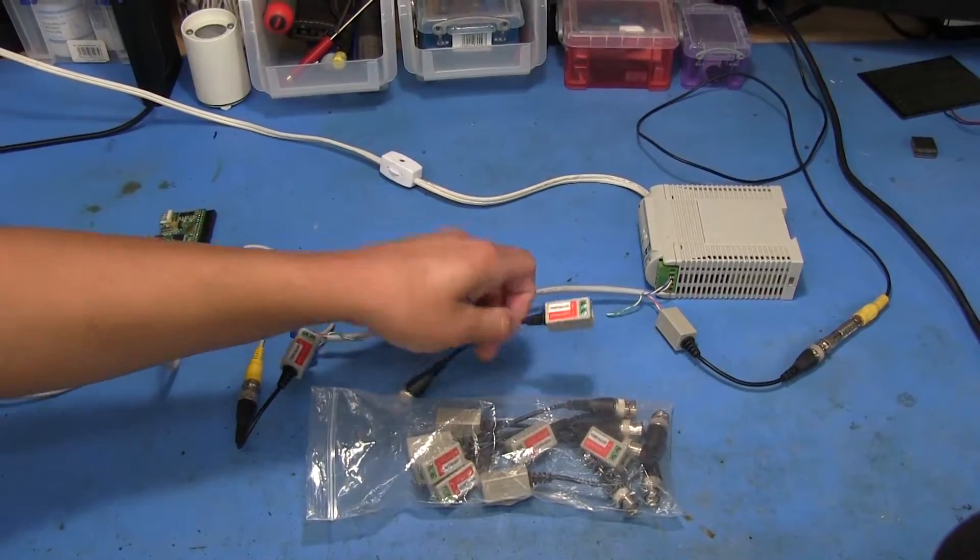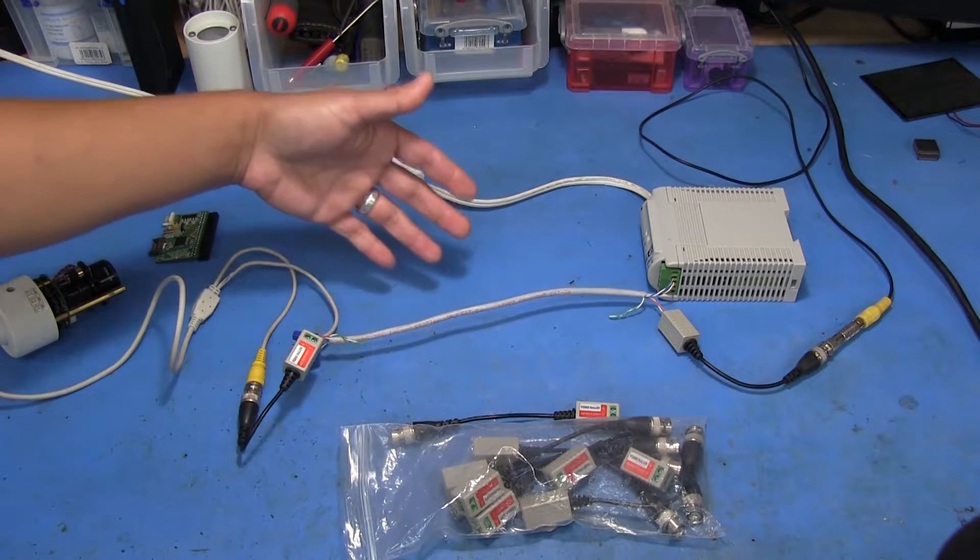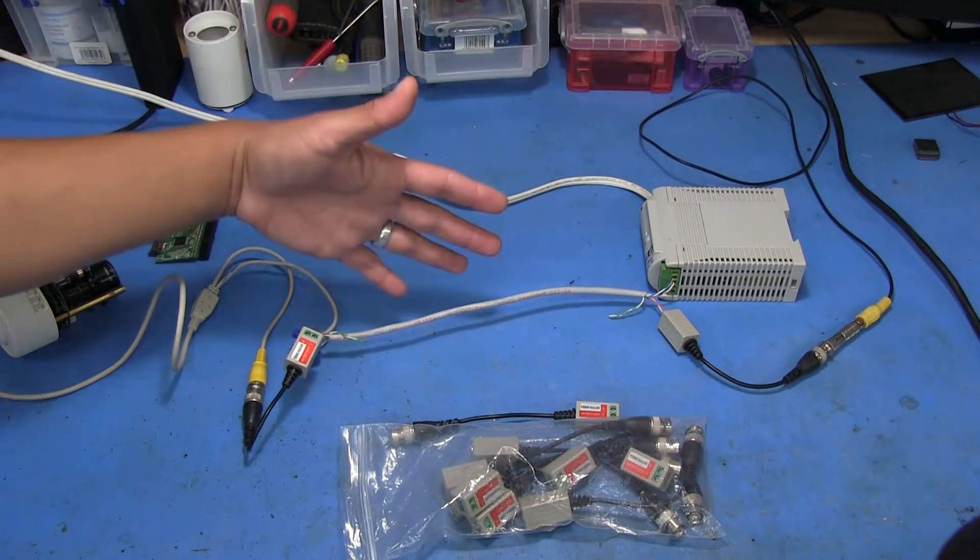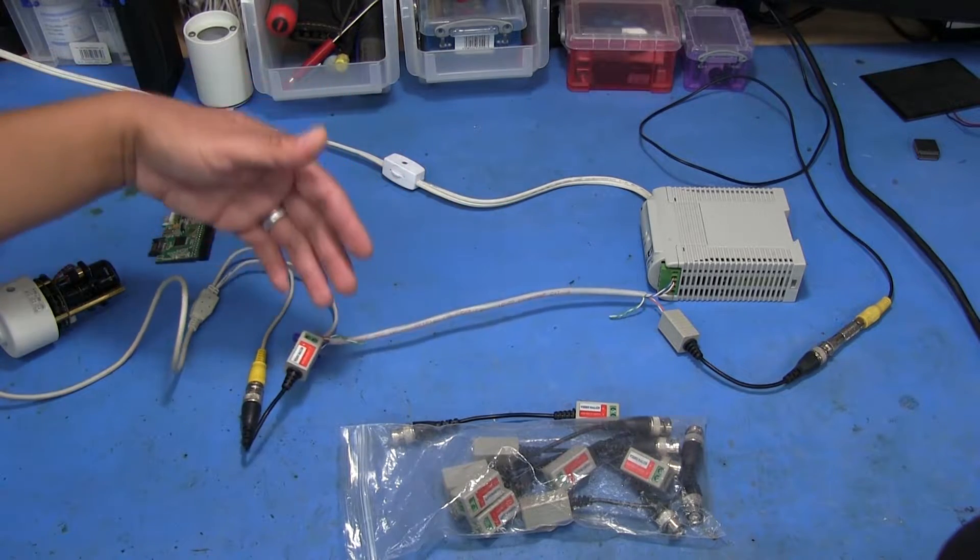This just makes it easier to run your cable because Cat5 cable, or networking cable like this in general, is really cheap compared to having something like dedicated coaxial wire running here.